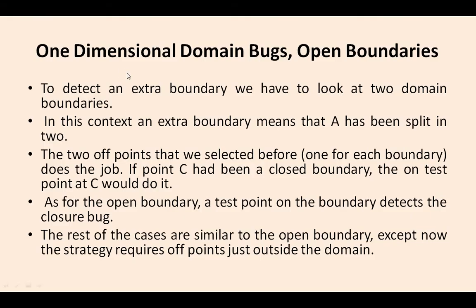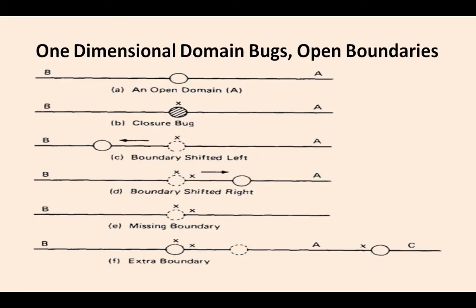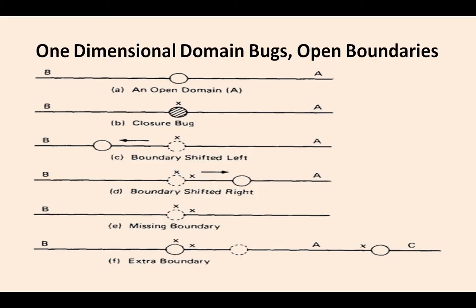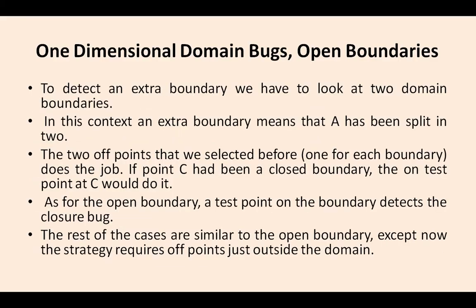Here we found some extra boundary. Extra boundary means there must be some error in this context. Extra boundary means A has been split into two — A has been split into two whenever it identifies an extra boundary. The two off points we have selected — point C does the job. If point C has been on a closed boundary on the test, C would detect it. C is also having the shifted boundary. As for open boundary, a test point on the boundary detects the closure bug.